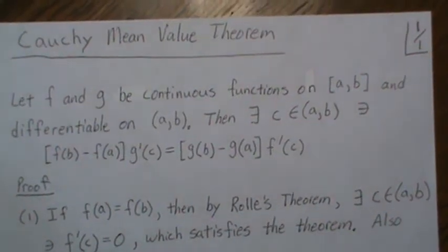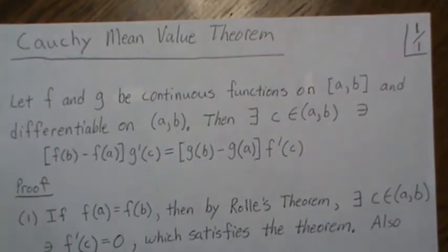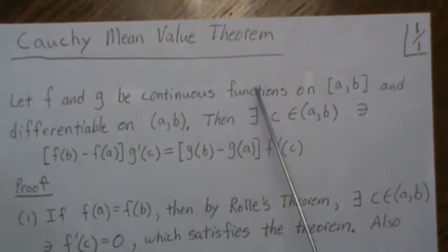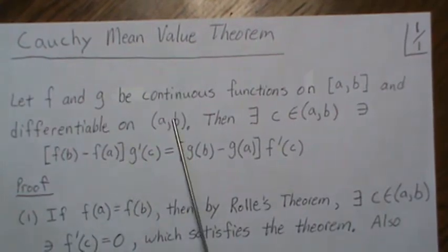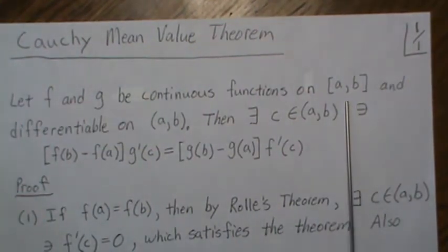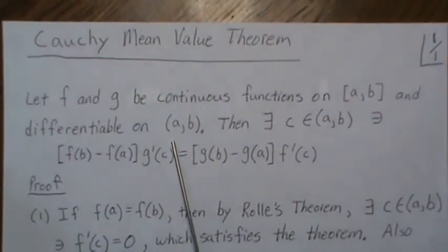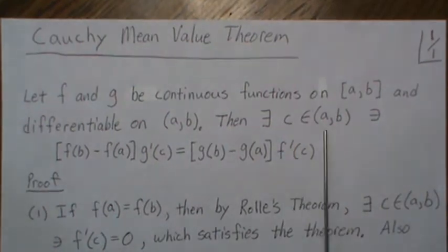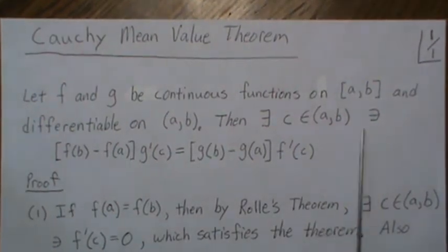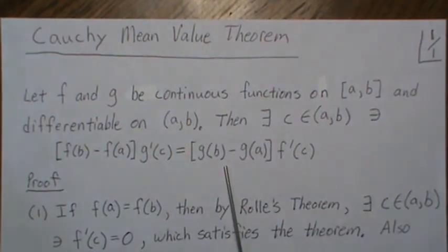Hello, in this video we look at the Cauchy Mean Value Theorem, which is often just called the general mean value theorem. Let f and g be continuous functions on the closed interval [a,b] and differentiable on the open interval (a,b). Then there exists a point c in this interval such that this relationship is true, and we will prove that.